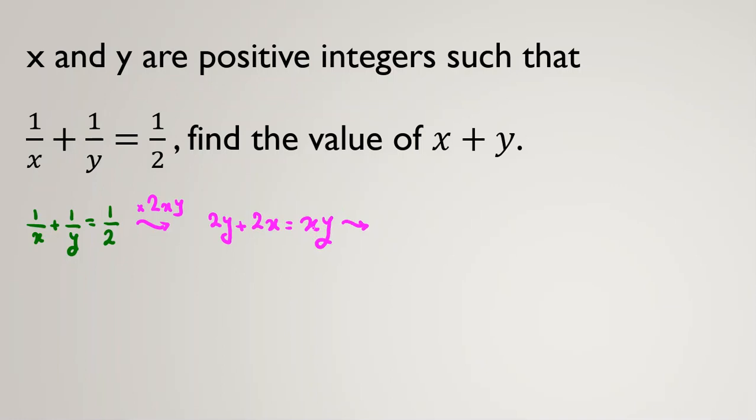Now I take all things to one side, so 0 = xy - 2y - 2x. Now I want to factorize.